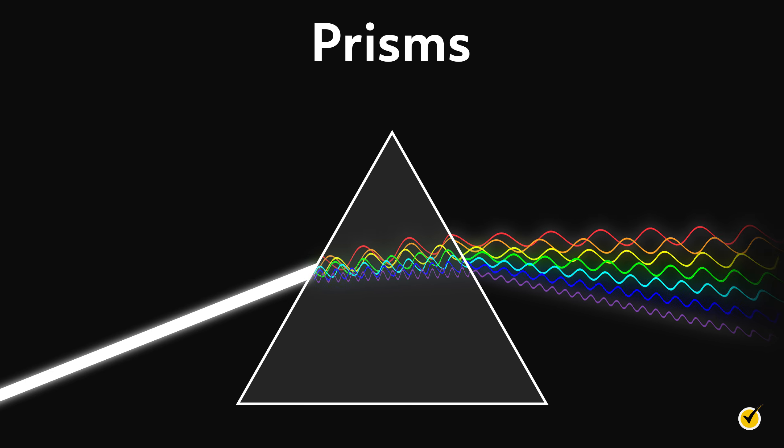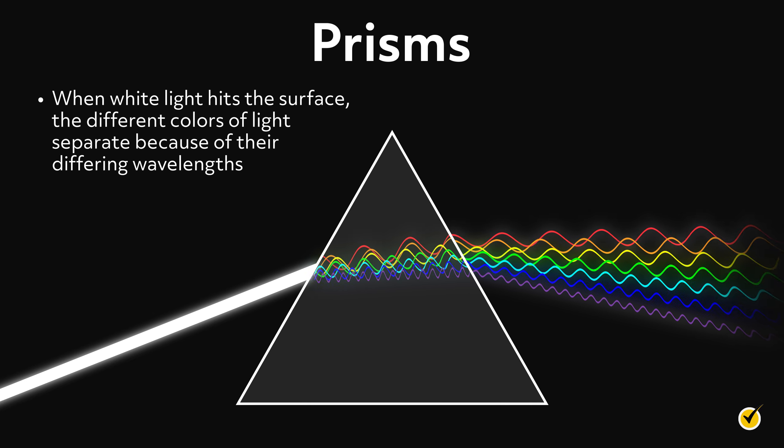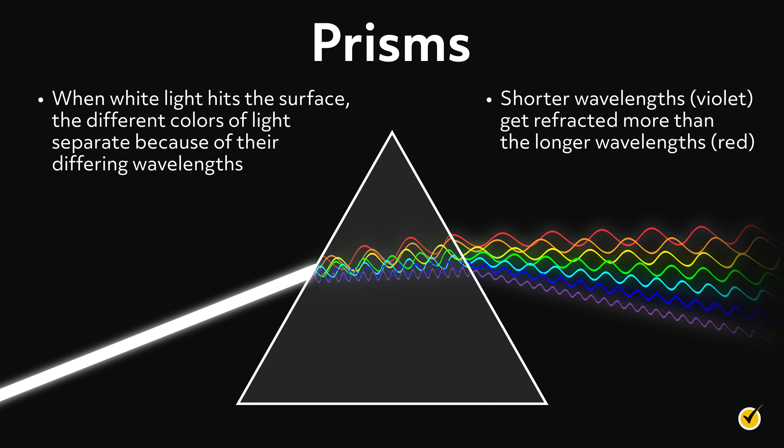Prisms, as well as other materials like glass, have light refracting properties. When white light hits the surface, the different colors of light separate because of their differing wavelengths. Shorter wavelengths, violet, get refracted more than the longer wavelengths, like red. They refract again once they leave the prism due to the differences in refractive properties between air and the prism.